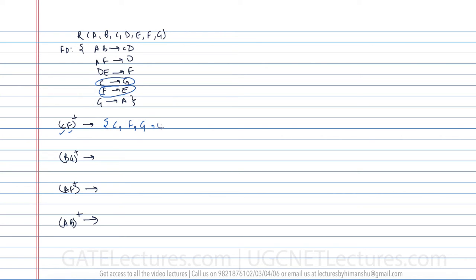For CF closure: start with {C, F}. C determines G, so add G. F determines E, so add E. G determines A, so add A. Now A and F are both present, so AF→D gives us D. We have D and E, so DE→F, but F is already included. We cannot determine B from any combination. Therefore CF closure is {A, C, D, E, F, G}.